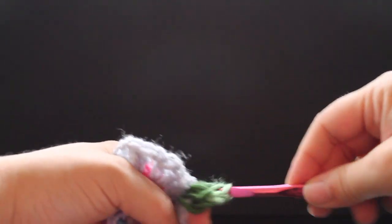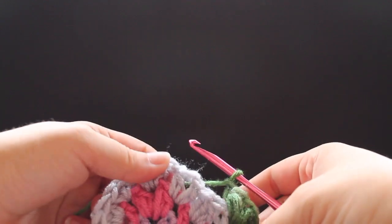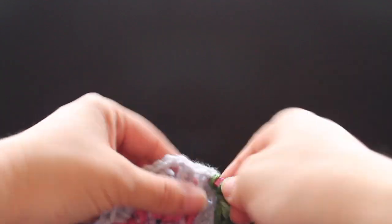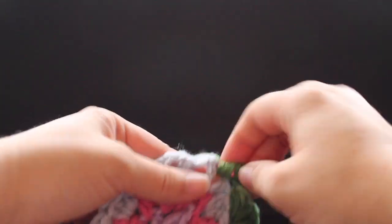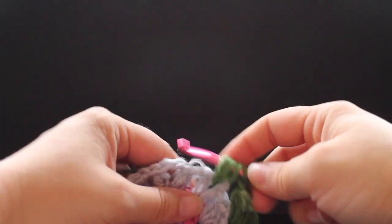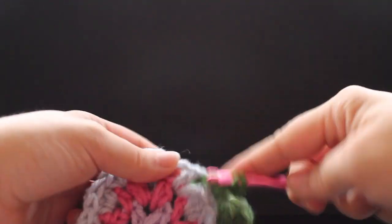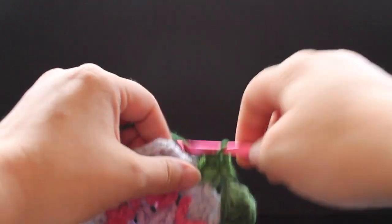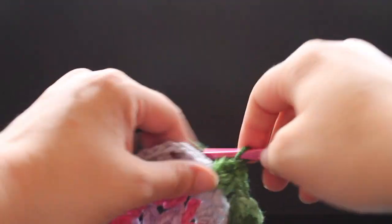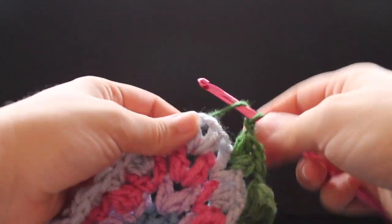Chain one, small puff v-stitch in the next half double crochet v-stitch. So small puff, chain one, small puff in that same stitch, chain one.